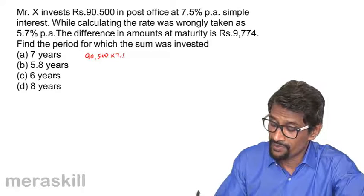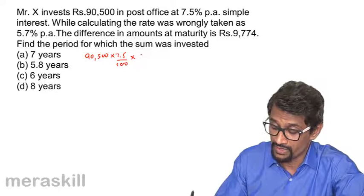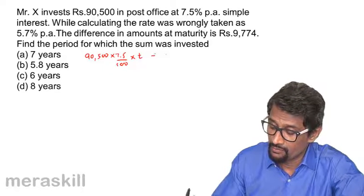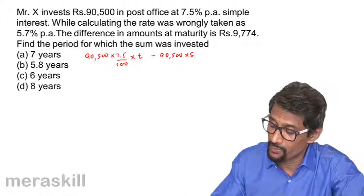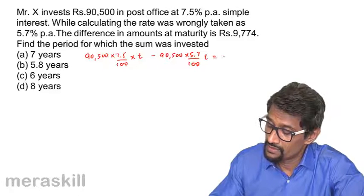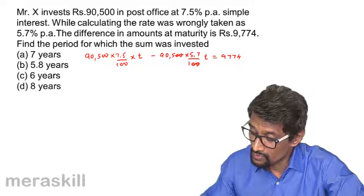So it's a case of 90,500 as principal, into 7.5 upon 100, into whatever is the period—say T—minus 90,500 into 5.7 by 100 T. This turns out to be 9,774.